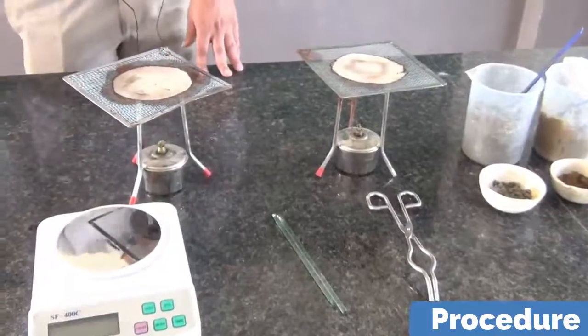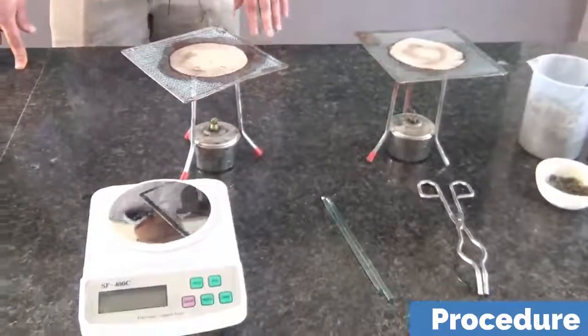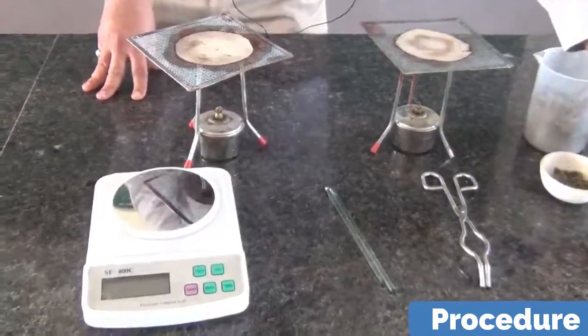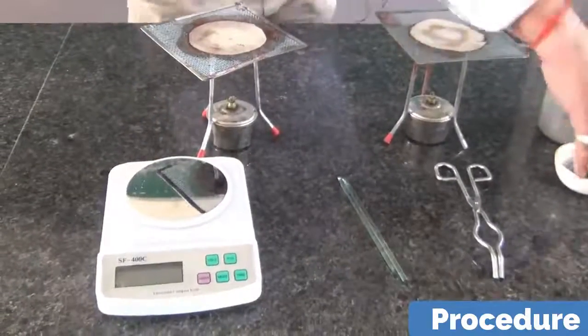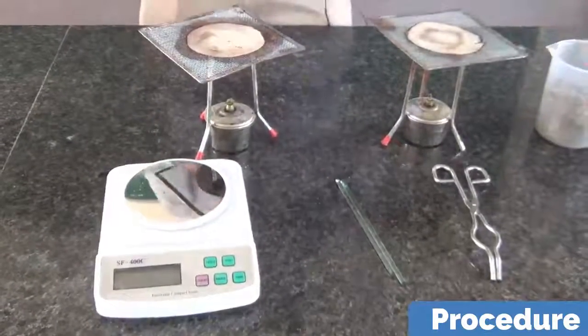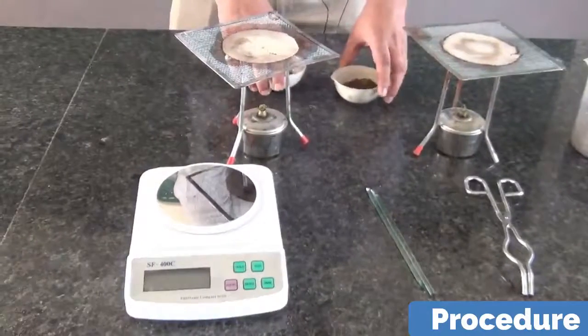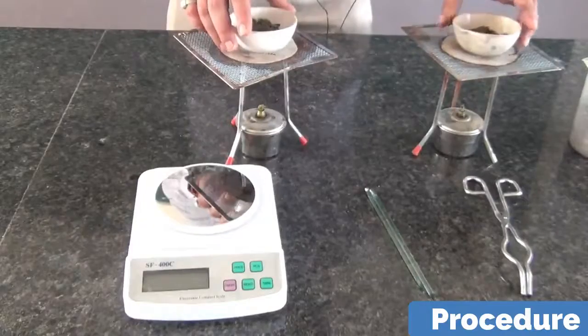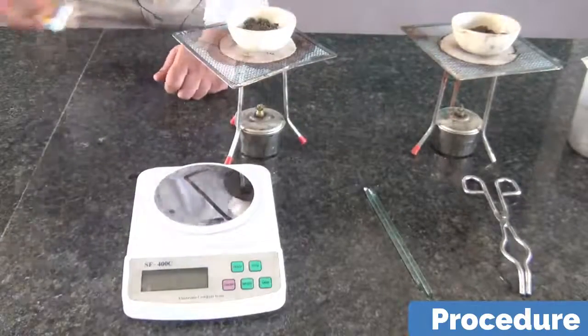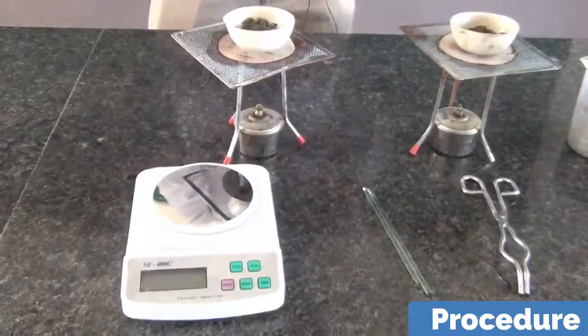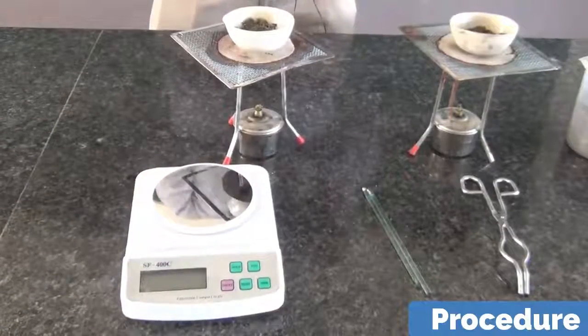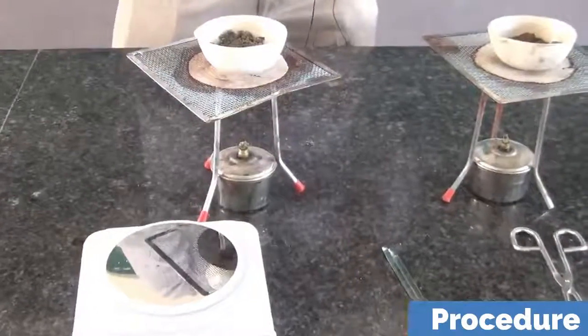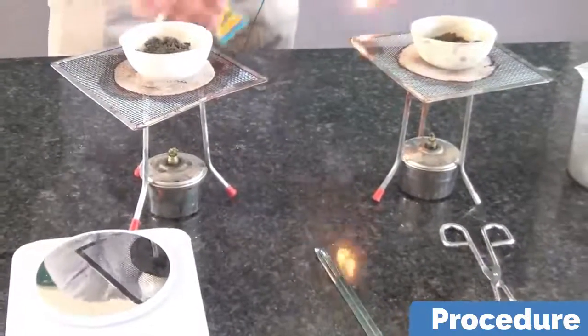Now let us talk about the procedure. First of all what we have to do is we have two soil samples. These two soil samples we have to heat for about 10 minutes. We have to keep them on the wire gauze and heat them for about 10 minutes so that the water content which is present, the water moisture which is present, it goes out.